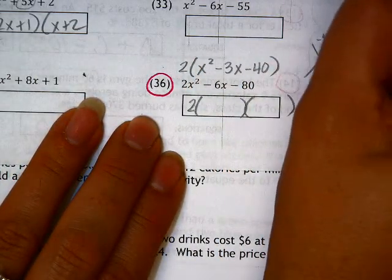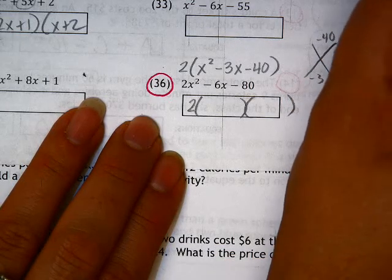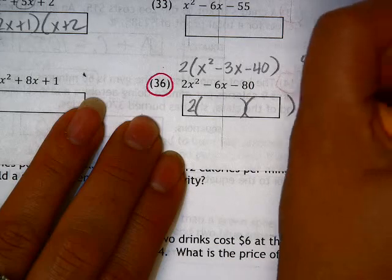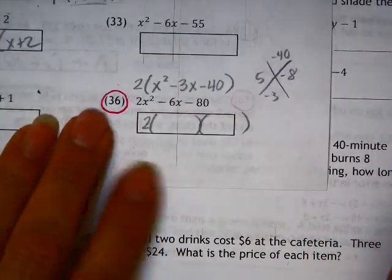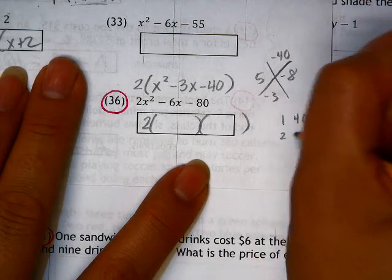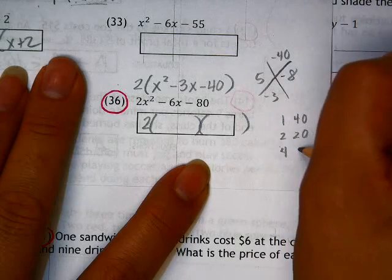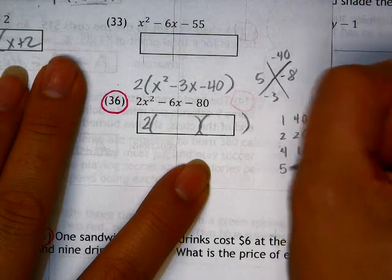Negative 40 and negative 3, so that puts us at 8 and 5. Now, say you couldn't figure that out. There's not that many things you have to check. You have 1 and 40, that doesn't work. You have 2 and 20, that doesn't work. 3 doesn't go in. You have 4 and 10, that doesn't work. You have 5 and 8. Check.